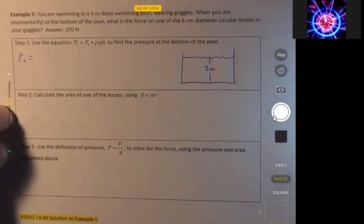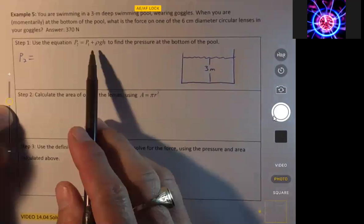In this video, we're going to find out how much force is acting on one lens of a pair of goggles. First, we're going to use this equation, which is found on your equation sheet.